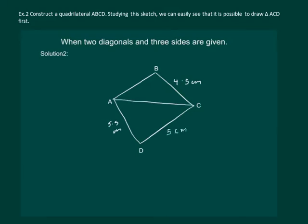AC is equal to 5.5 centimeters and BD is equal to 7 centimeters. So here we have a rough figure of ABCD. Now let us use our compass and ruler to draw the quadrilateral ABCD.